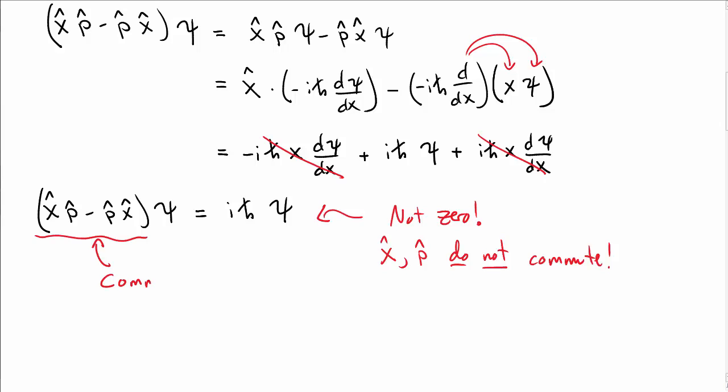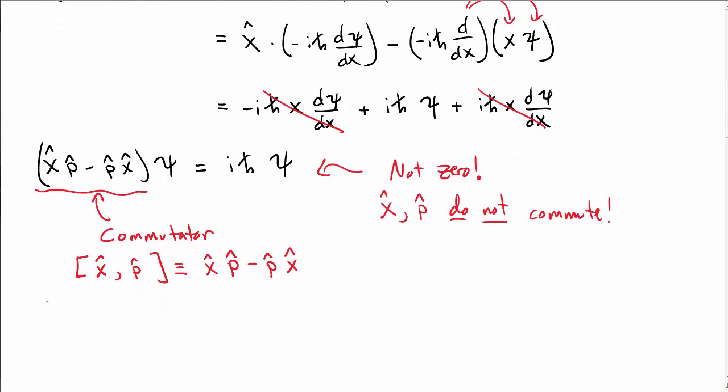We commonly write this combination as the commutator. In particular, we use square brackets x-hat comma p-hat. And by that, we mean x-hat p-hat minus p-hat x-hat. That's just what we mean by that commutator language. Actually, in general,